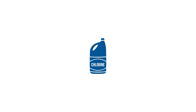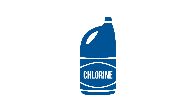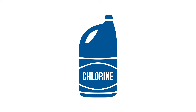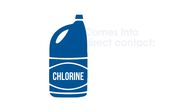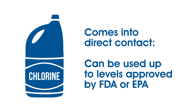For example, chlorine has an annotation that if it's being used in post-harvest handling or in a flume and it comes into direct contact with produce, it can be used up to the levels approved by the FDA or the EPA. The exception would be the final rinse has to meet the Safe Drinking Water Act, which is four parts per million.